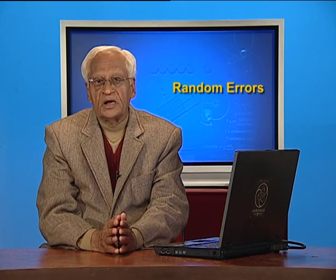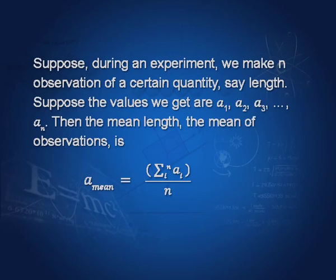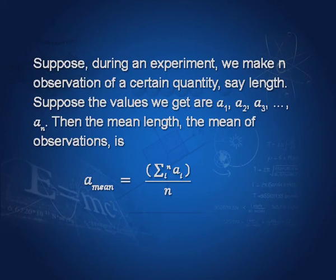Suppose during an experiment we make n observations of a certain quantity, say length. Suppose the values we get are a₁, a₂, a₃, and so on up to aₙ. Then the mean length — the mean of all observations — is a_mean equal to the sum of all the observations divided by n.